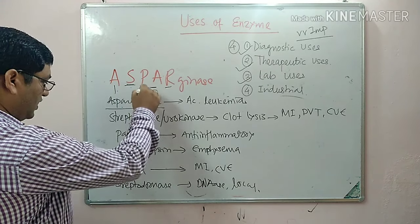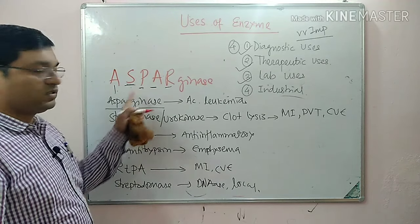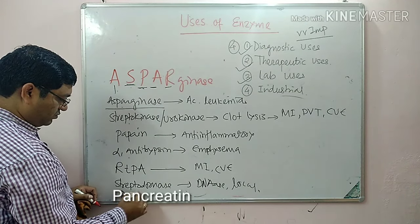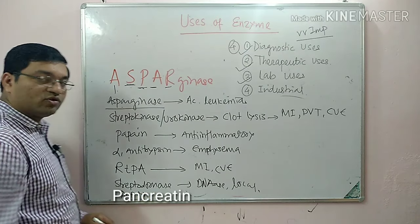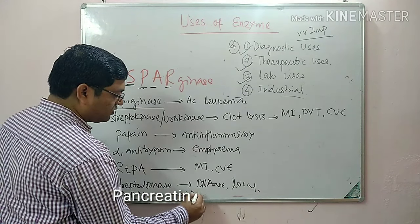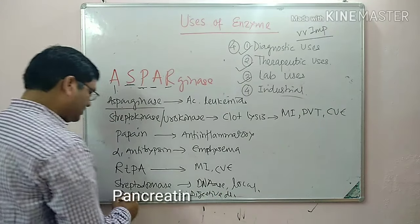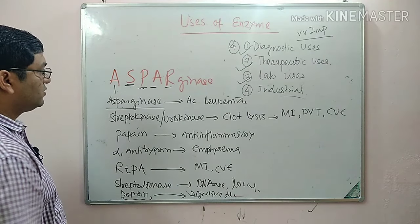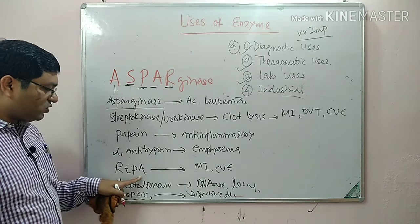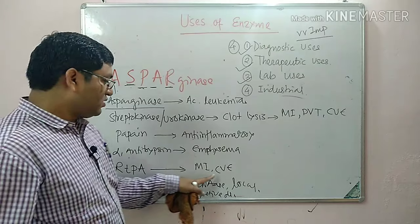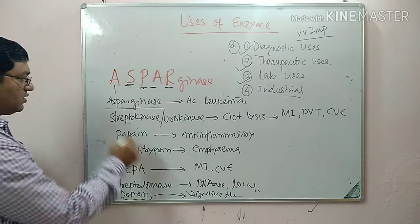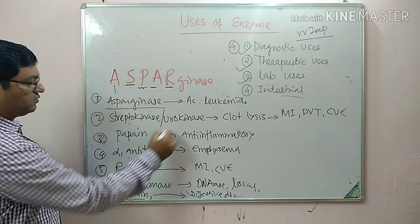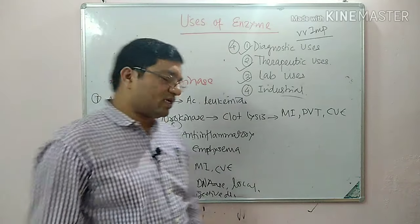Digestive enzymes such as trypsin and chymotrypsin are used in digestive disorders. In total there are eight enzymes with therapeutic uses: asparaginase, alpha-1 antitrypsin, streptokinase, streptodornase, papain, digestive enzymes, and recombinant tissue plasminogen activator.